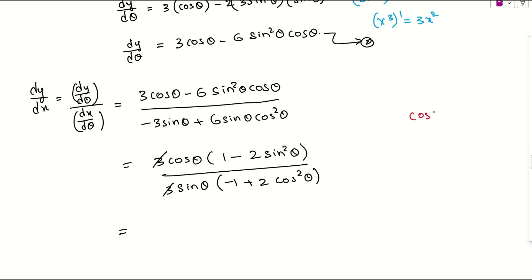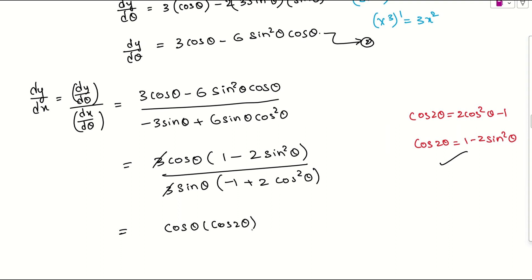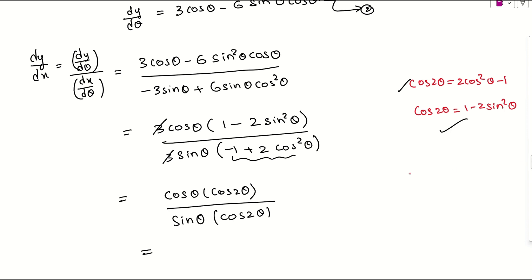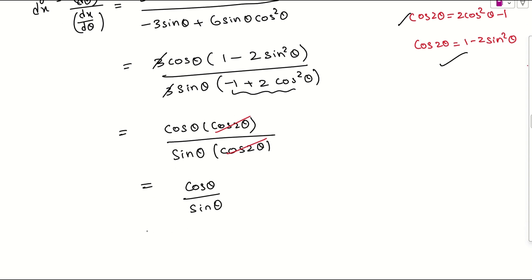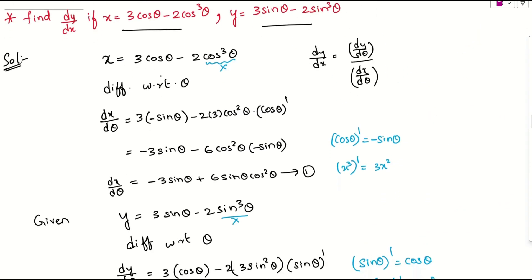We have the cos2θ formulas: cos2θ = 1 minus 2sin²θ, and also cos2θ = 2cos²θ minus 1. The numerator becomes cosθ times cos2θ, and the denominator becomes sinθ times cos2θ. The cos2θ terms cancel, leaving cosθ/sinθ, which is cotθ. Therefore, dy/dx = cotθ.